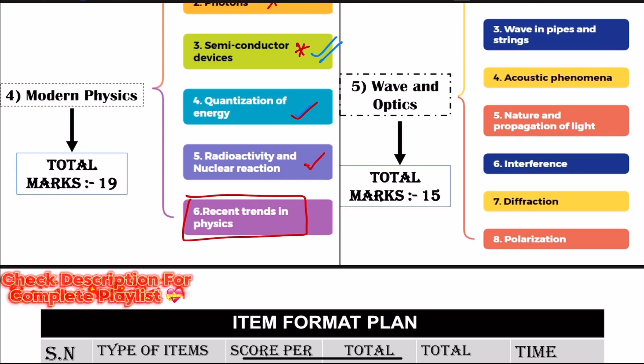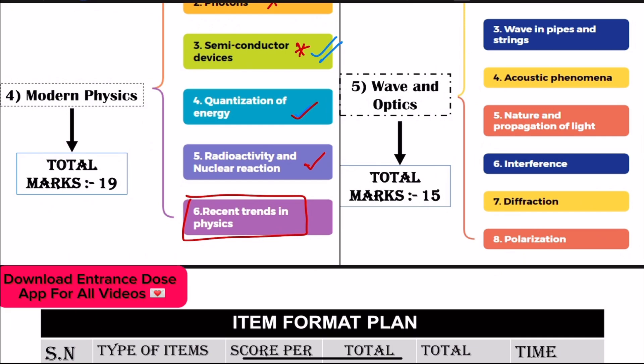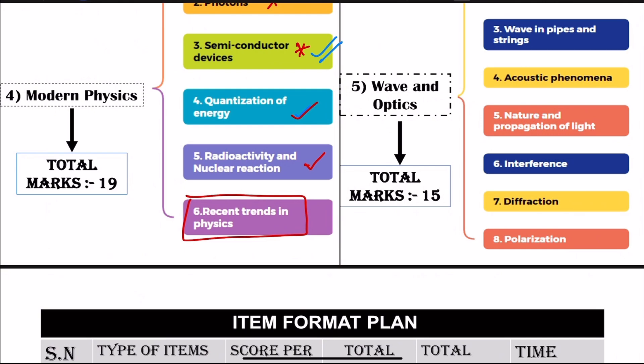Now radioactivity and nuclear reactions. Different types of radiation: alpha, beta particles, and gamma rays. The radioactive disintegration law is an important topic. Expression for half-life, decay constant, and mean life — this covers radioactivity and nuclear reactions.